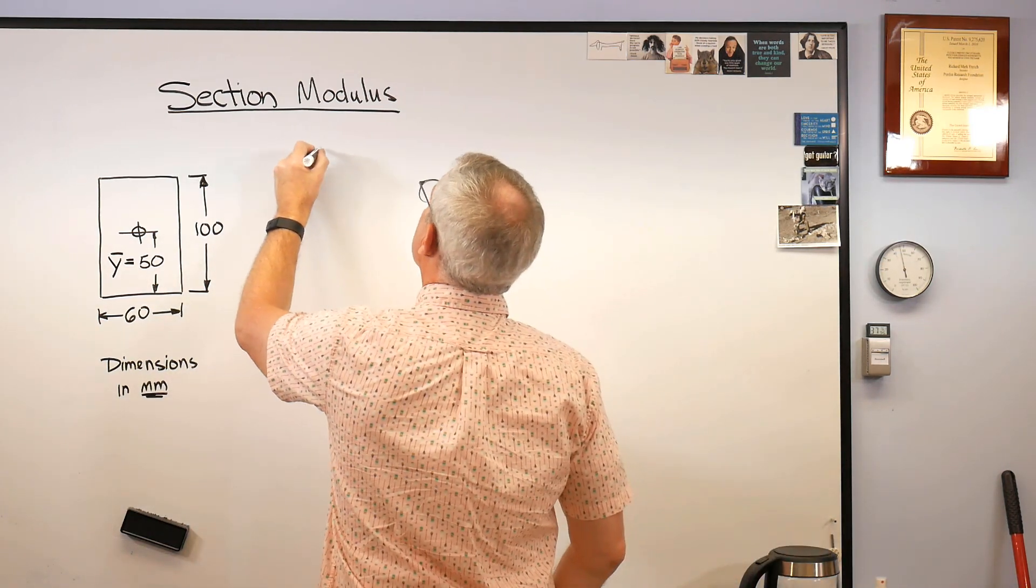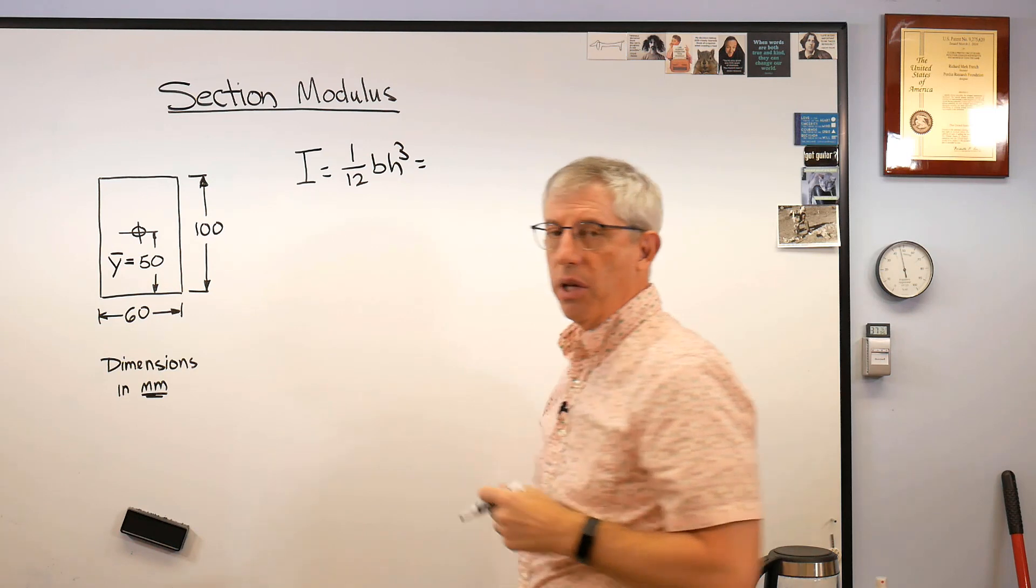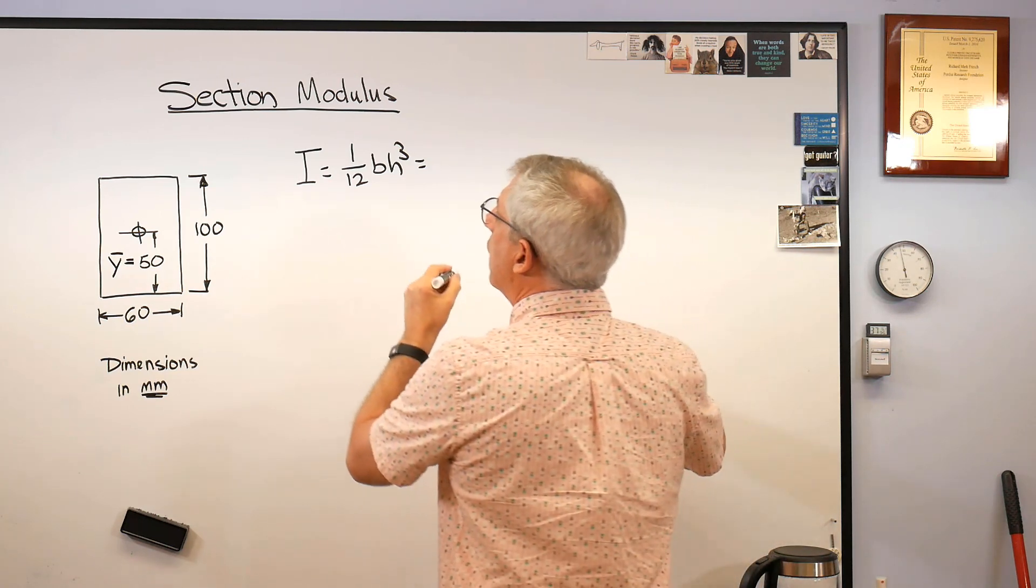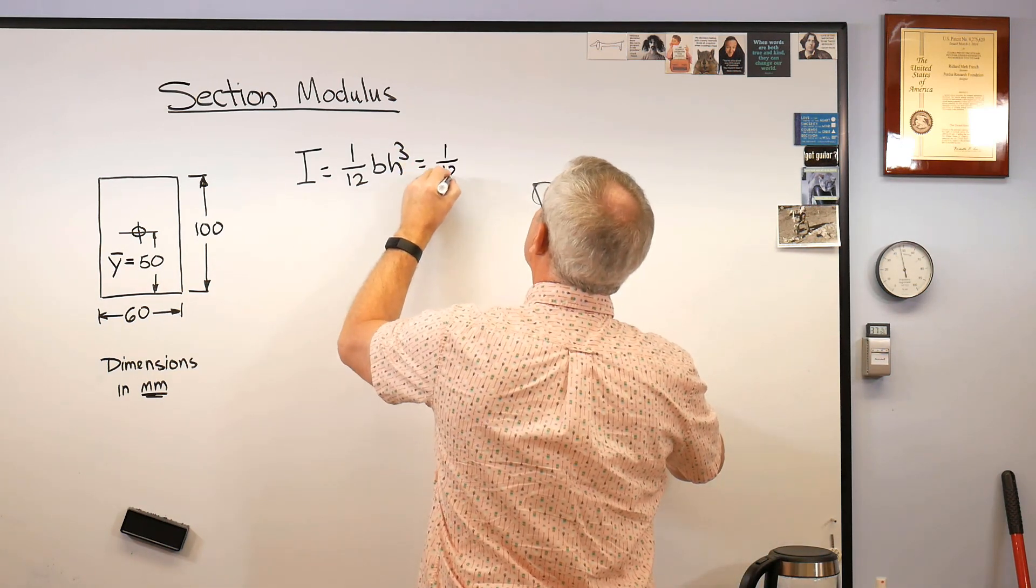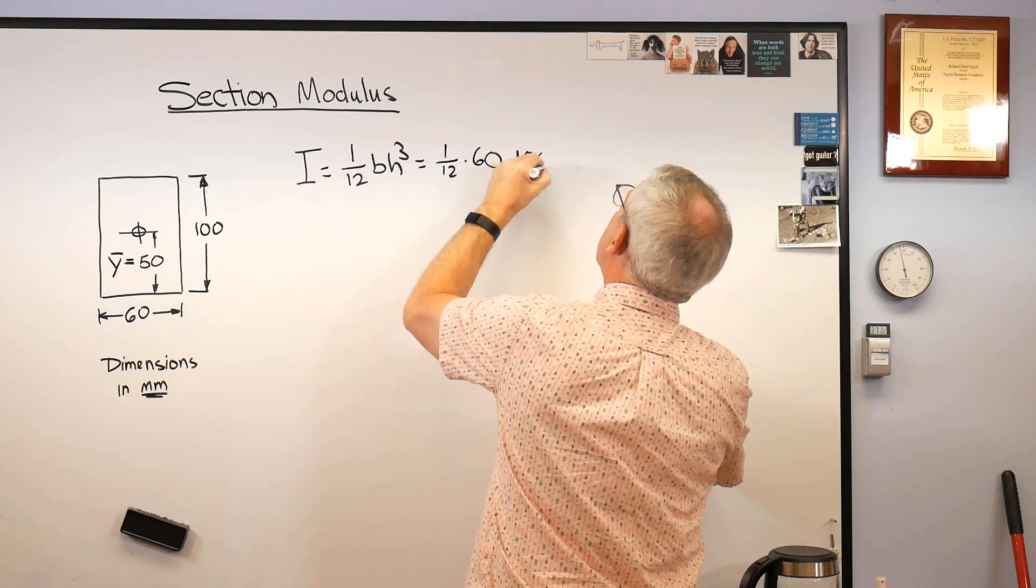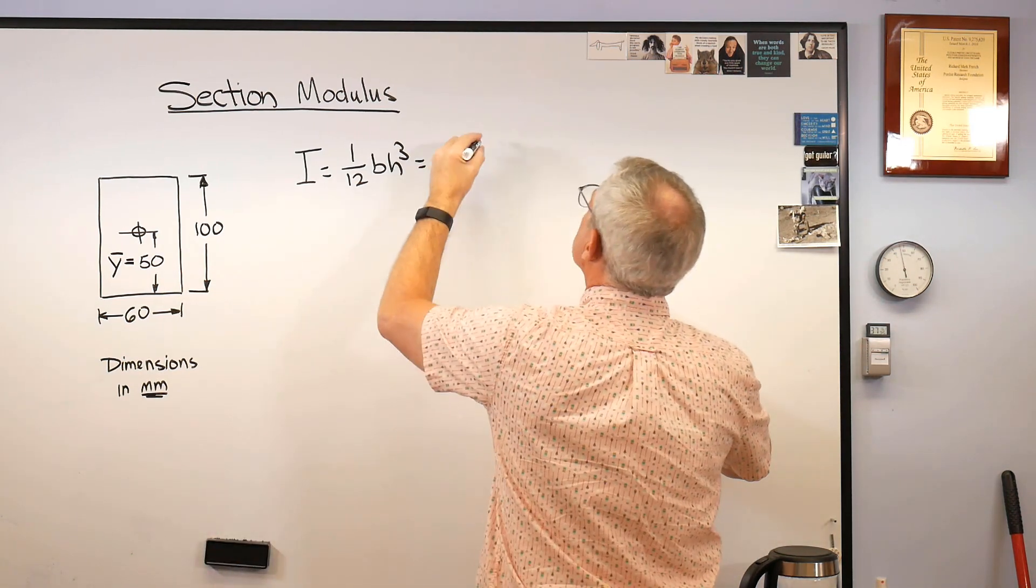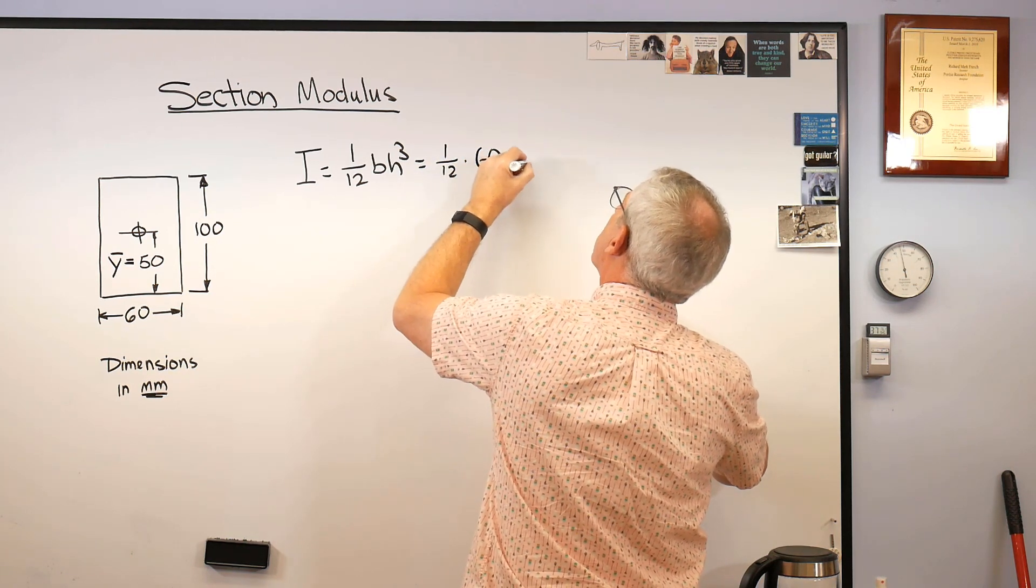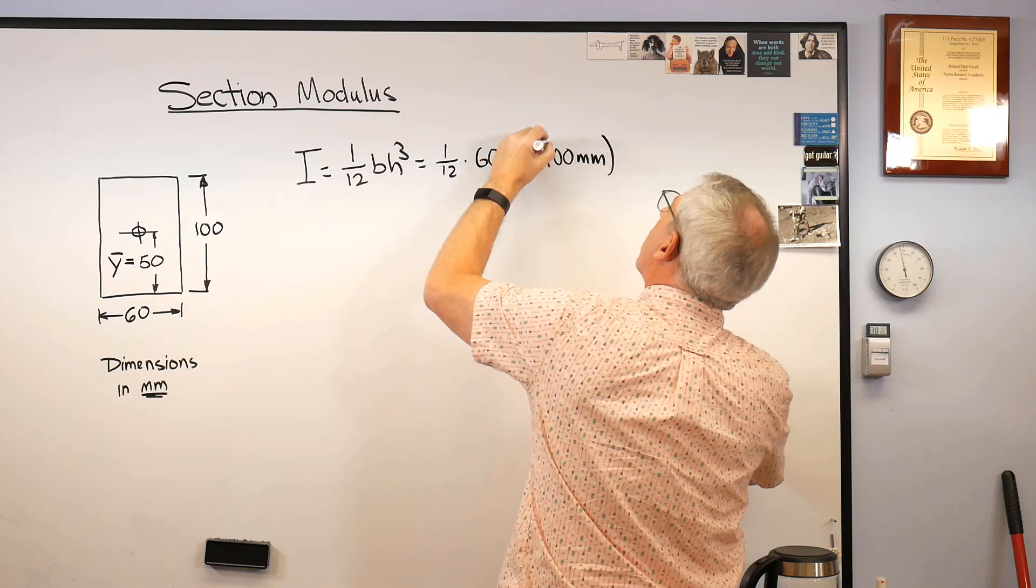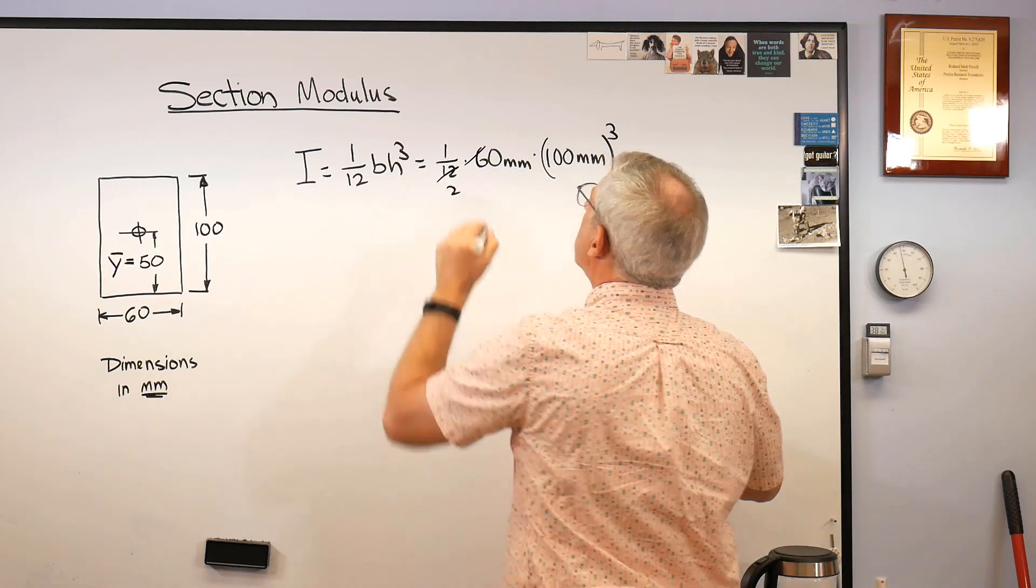So what's I? Well it's 1/12 bh cubed and remember the units come out millimeters to the fourth which is kind of a weird unit but that's what it should be. So 1 over 12 times, let's see, base is 60 times 100. Oops, oh I'm doing a bad thing here. I'm leaving my units off. Never leave your units off. Ah I feel better now. 100 millimeters, that whole thing cubed. And the reason I picked 60 because the 6 of the 6 and the 12 work out there.